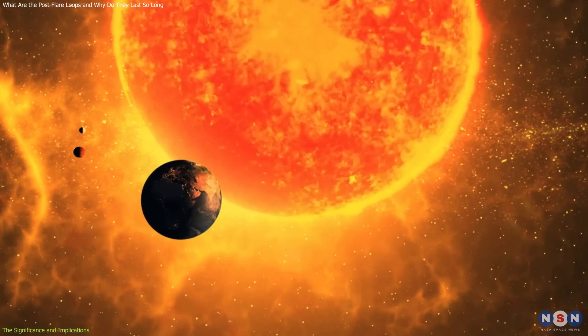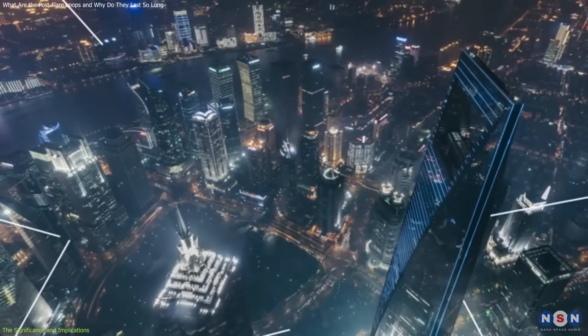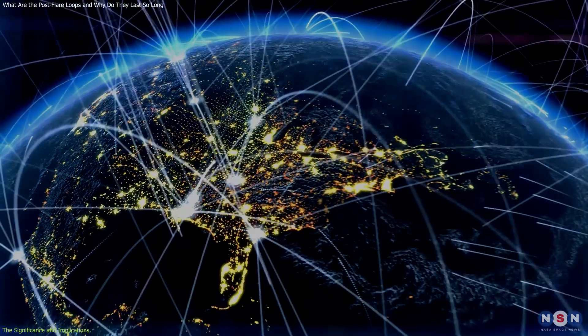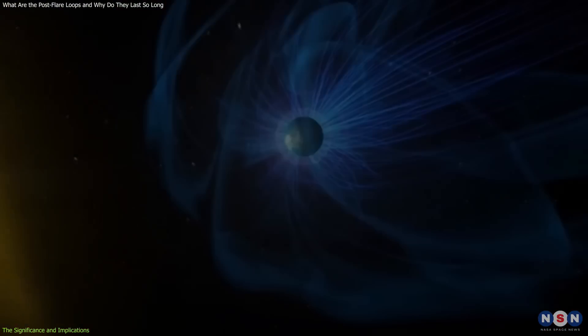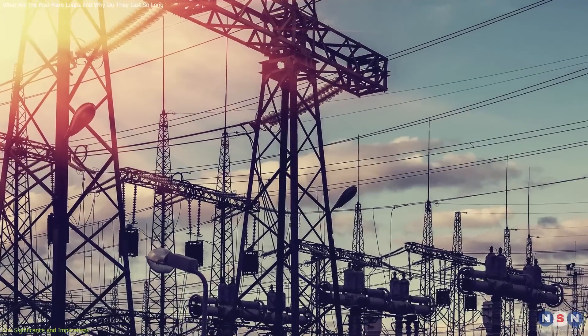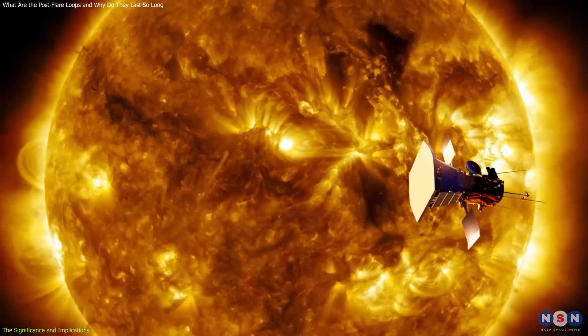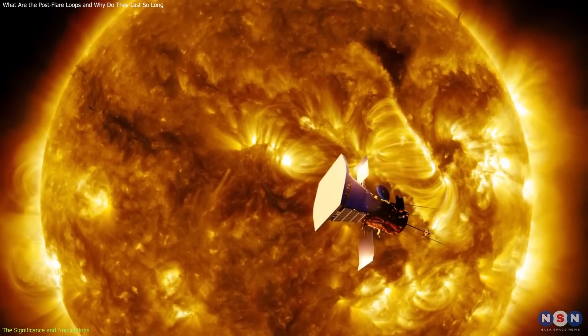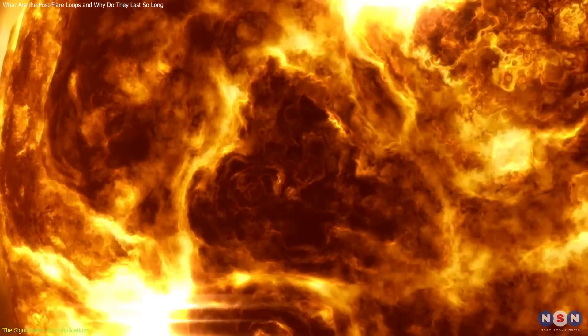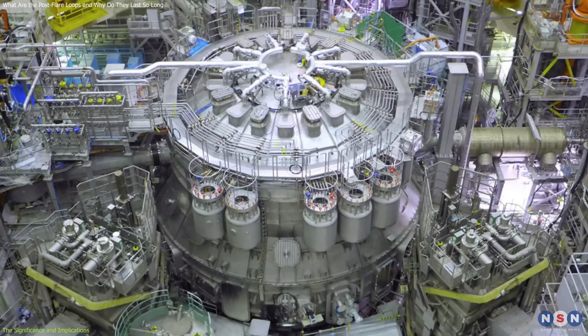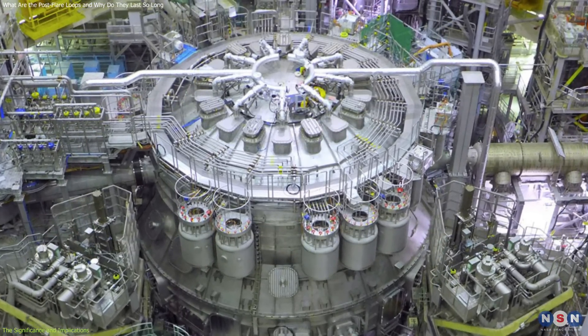Second, the sun is also a source of danger and disruption for our technology and infrastructure, especially in the era of space exploration and digital communication. By understanding how the sun produces solar storms and how they affect the Earth and its surroundings, we can better protect and improve our satellites, power grids, and communication systems. Third, the sun is also a source of inspiration and innovation for our science and engineering, especially in the field of nuclear fusion and clean energy. By understanding how the sun produces and sustains fusion reactions and how it creates and controls plasma and magnetic fields, we can better develop and optimize our own fusion reactors and plasma devices.